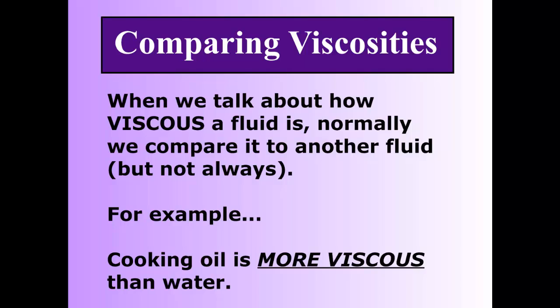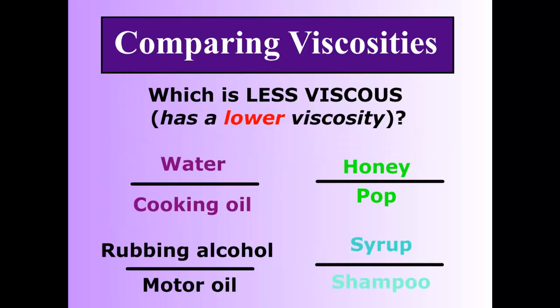When we talk about how viscous a fluid is, normally we compare it to another fluid. For example, cooking oil is more viscous than water — or less viscous than water, whichever it is. Can we compare some of these? Which has a lower viscosity, or which is less viscous? Remember, less viscous means flows faster. Water or cooking oil? Honey or pop? Syrup or shampoo? Rubbing alcohol or motor oil?